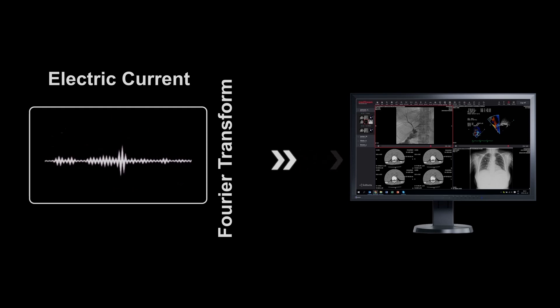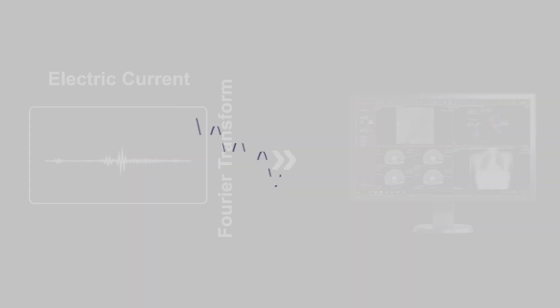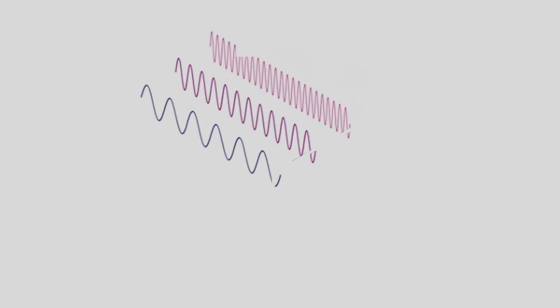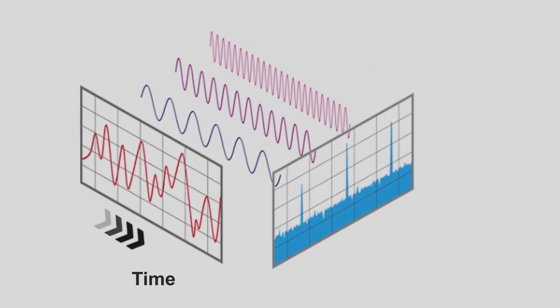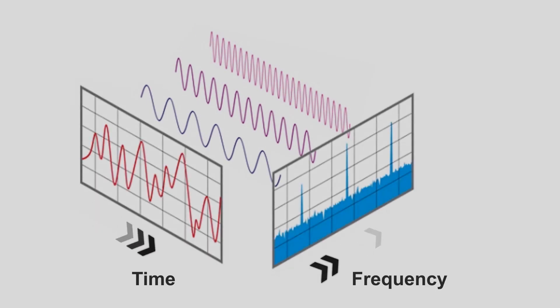The electrical current is transformed via a computer using a mathematical calculation called Fourier transformation. A Fourier transformation is a mathematical calculation that is used to change the electrical current into an image. It converts a signal into individual spectral components and thereby provides frequency information about the signal.